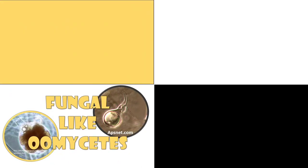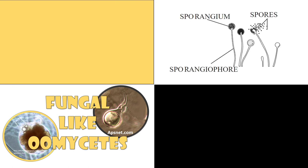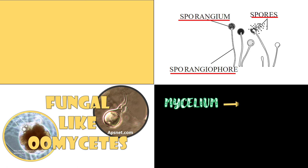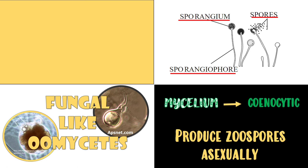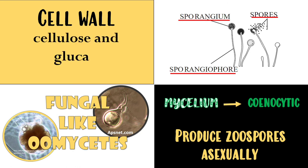Fungal-like oomycetes are spore-bearing organisms. Their sporangiospores are enclosed in a sporangium attached on a sporangiophore. Their mycelium are coenocytic. They produce zoospores sexually, and lastly their cell wall is made up of cellulose and glucan.